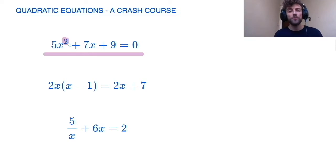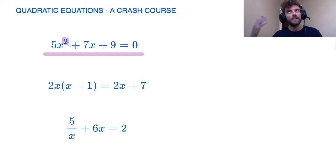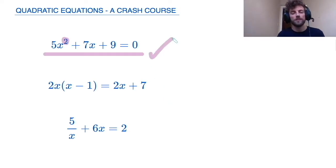In other words, a quadratic equation is an equation with an x squared in it, and it doesn't have anything larger than x squared, like x cubed, x to the 4, x to the 5, etc. Therefore, this is a quadratic equation.